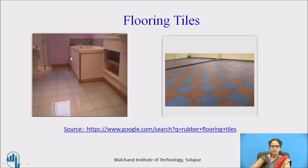Next, you have the flooring tiles. The tiles which are laid on the flooring are called flooring tiles — they are used to cover the floor area. Ceramic tiles are the most common type available for flooring. Other types of tiles are also available, which are easy to install and light in weight.